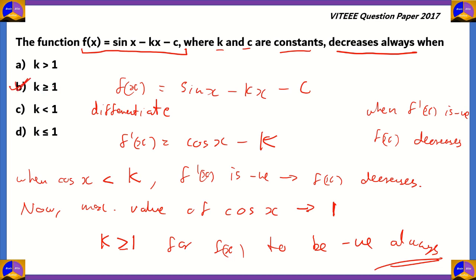Options C and D are incorrect because when k < 1, cosx can be greater than k, so f(x) does not always decrease. When k > 1 it is true, but the more appropriate option is k ≥ 1 because we also need to account for the case k = 1, where f'(x) = 0 at most. Therefore option B, k ≥ 1, is the correct answer for this 2017 question.